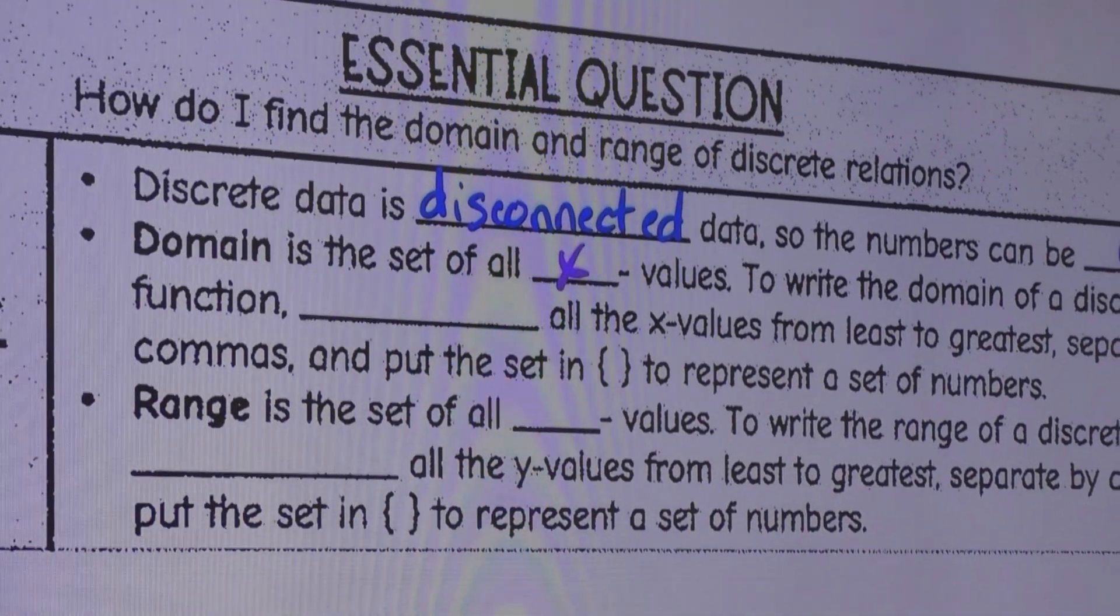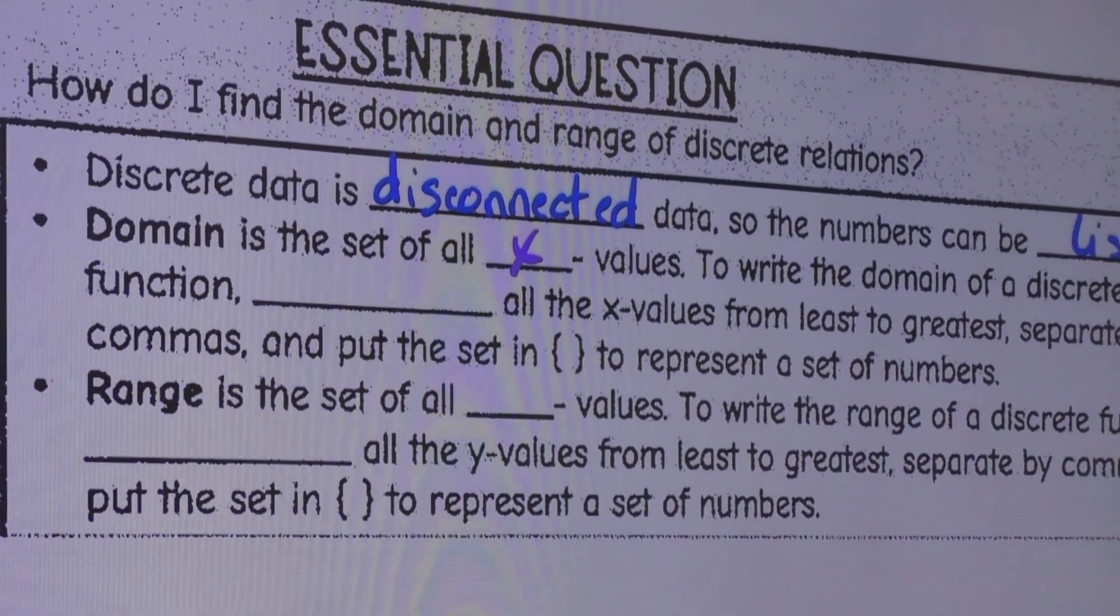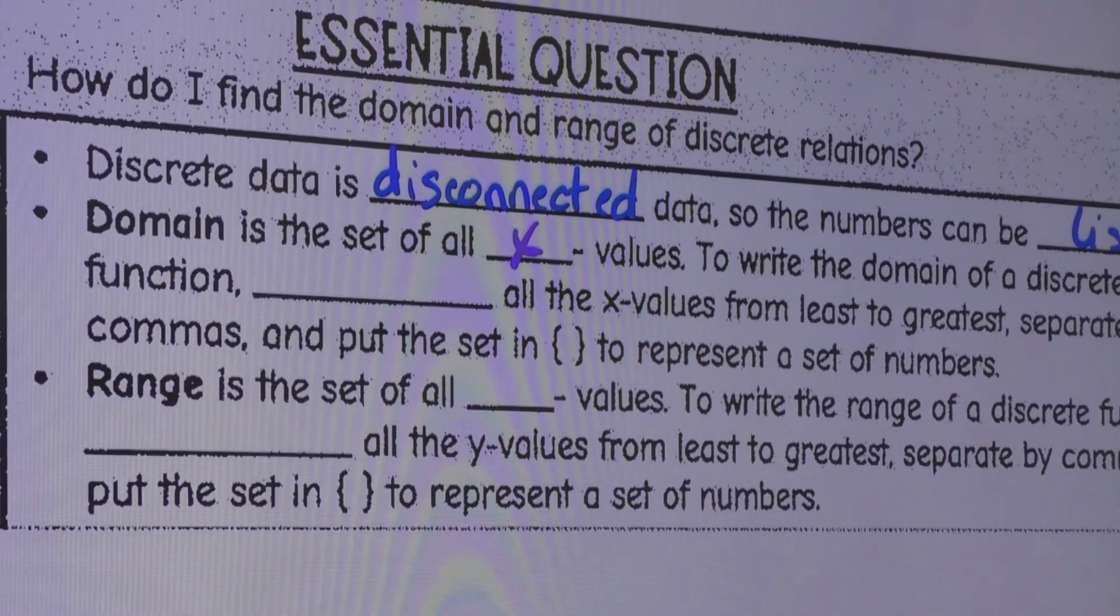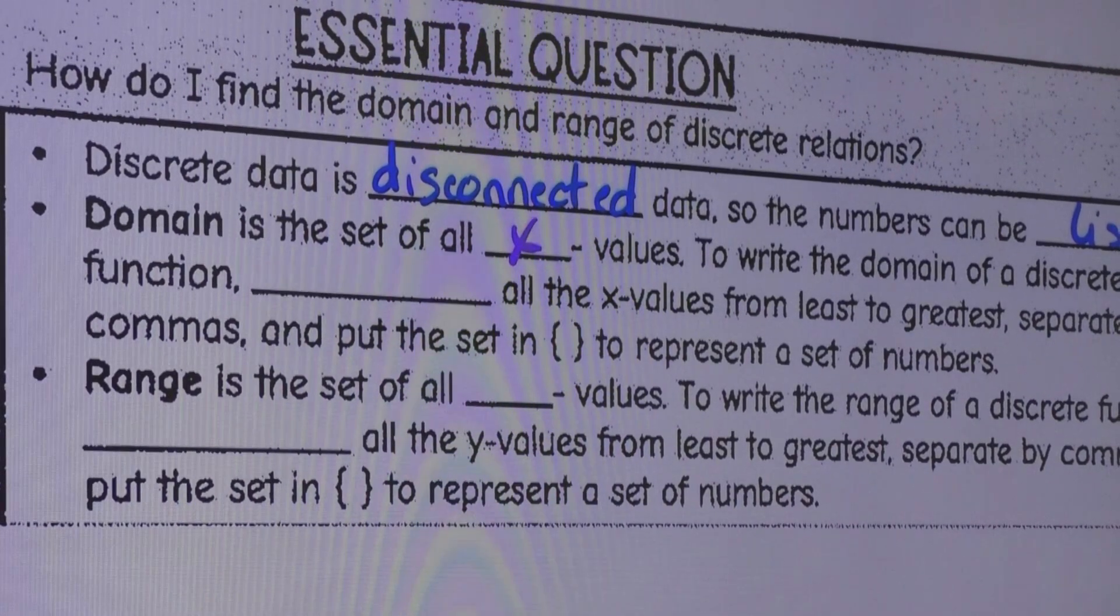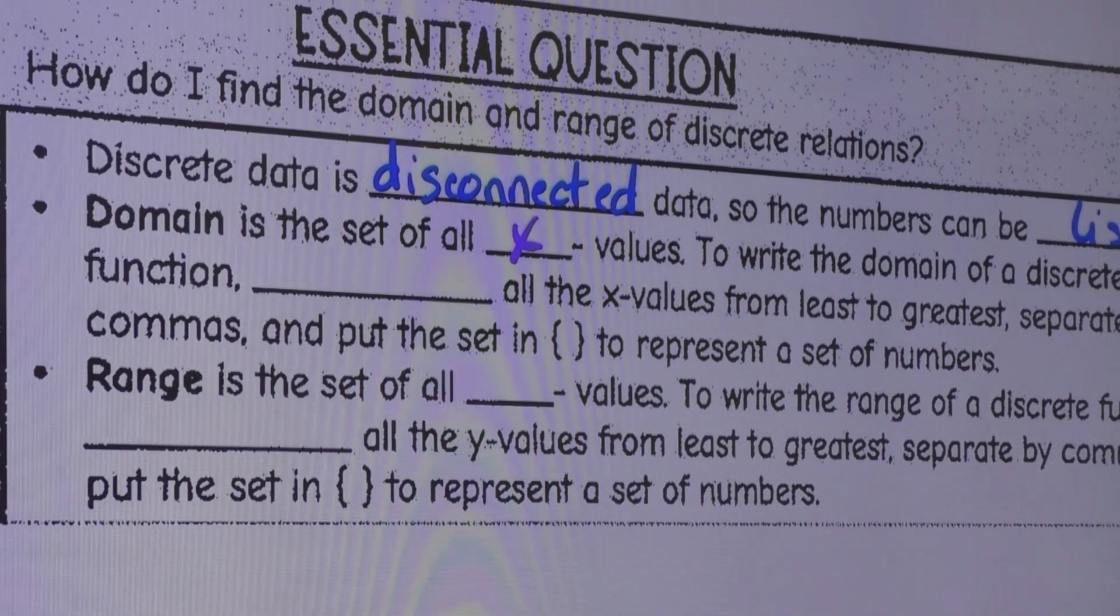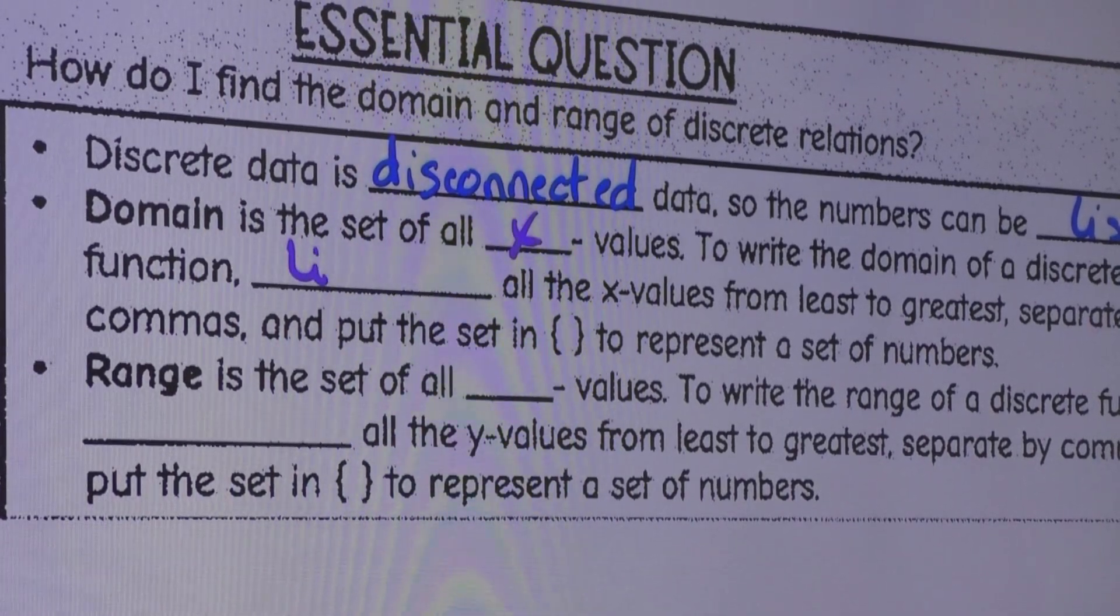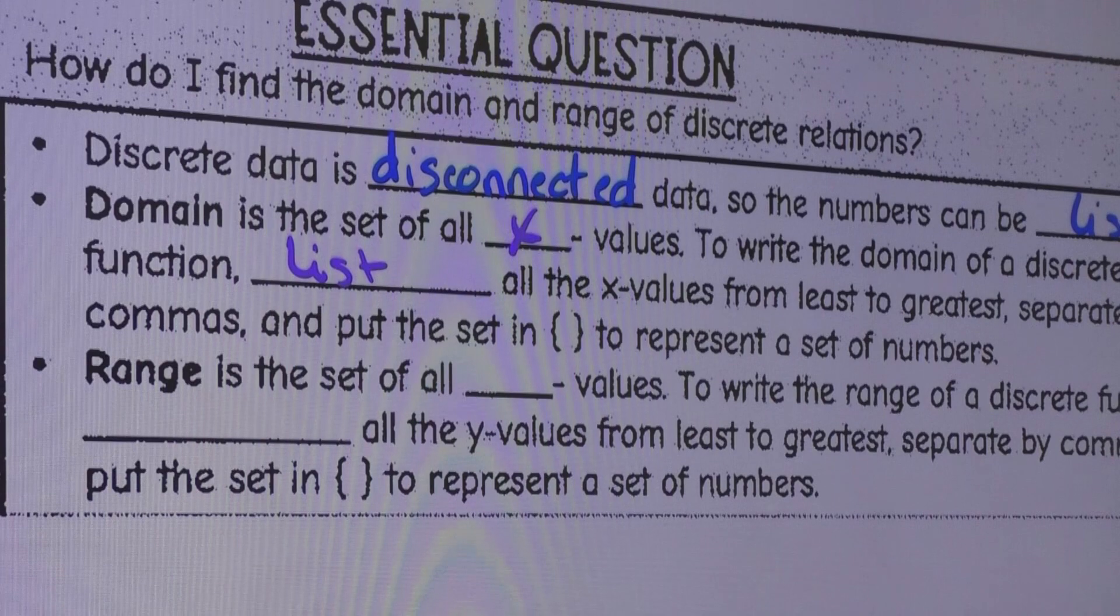To write the domain of a discrete function or graph, you're going to list, literally just list, all the X values from least to greatest.